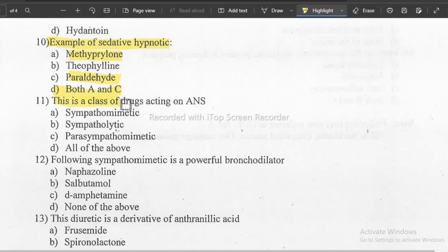Next, this is a class of drug acting on CNS. Which drugs or which class acts on CNS? The correct answer is sympathomimetics, that is option A.